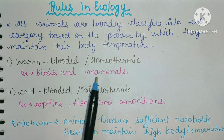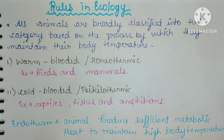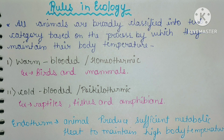In warm-blooded animals — birds and mammals, like we are — humans. What do they do? Their body temperature does not change with the outside environment. It is constant.